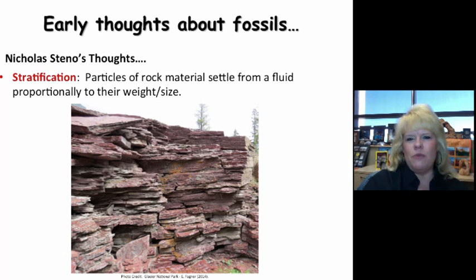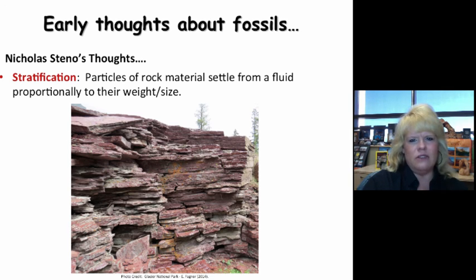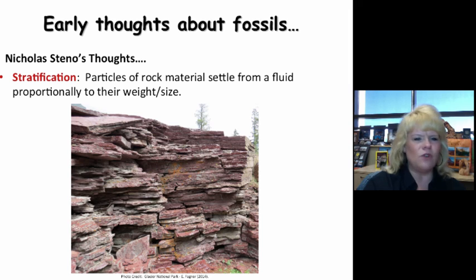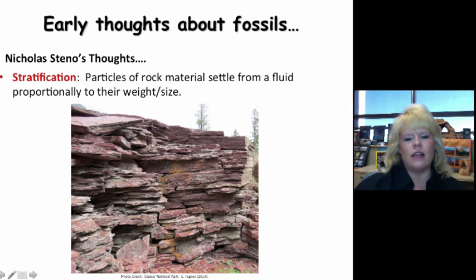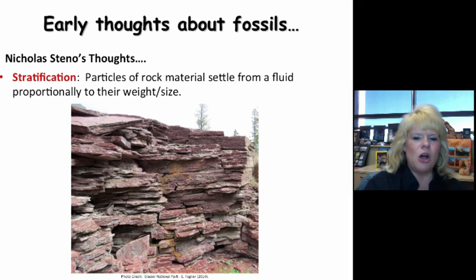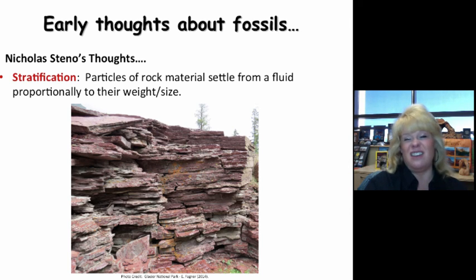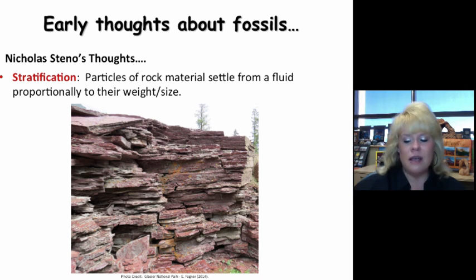Steno came up with three basic laws, starting by recognizing that rock layers occur in strata. Stratification means particles of rock material that settle out from a fluid — sometimes from wind — proportionally to their weight and size. You're looking here at rock strata of the Grinnell Formation in Glacier National Park, which are Precambrian in age. Those Precambrian sediments tell us a storyboard about Glacier National Park — it was a completely different depositional environment back in the Precambrian than it is today.